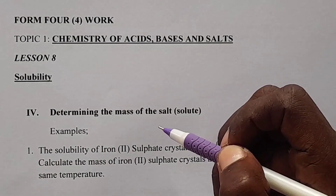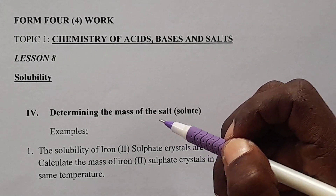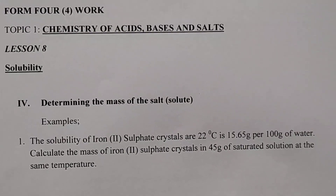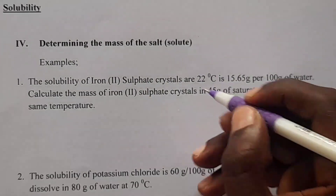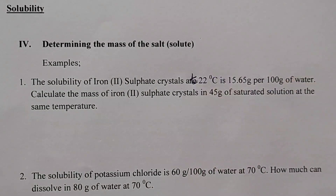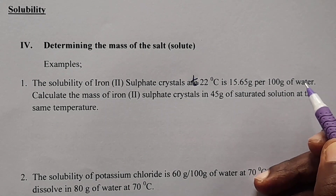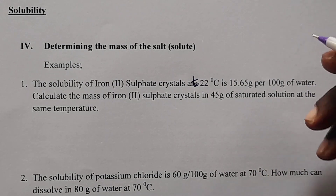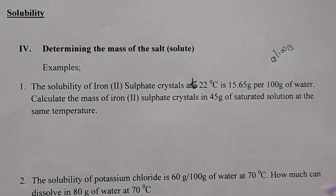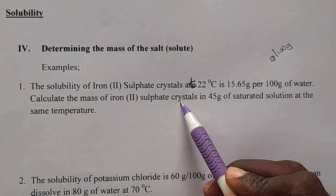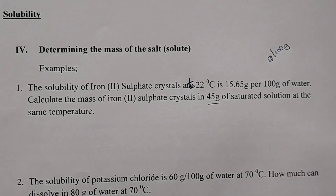Remember in Romeo 3 we were dealing with determining the mass of the solute. So, Example 1: we are told the solubility of iron 2 sulfate crystals at 22 degrees Celsius is 15.65 gram per 100 gram of water. Calculate the mass of the iron 2 sulfate crystals in 45 gram of saturated solution at the same temperature.